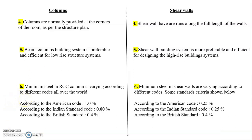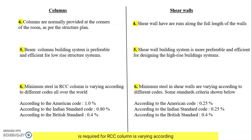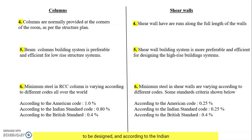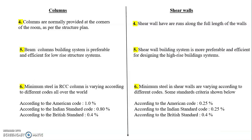The minimum steel reinforcement required for an RCC column varies according to different codes. According to the American code, it is 1% steel reinforcement. According to the Indian Standard code, 0.8% reinforcement is required for columns. According to the British Standard, 4.4% reinforcement is required.